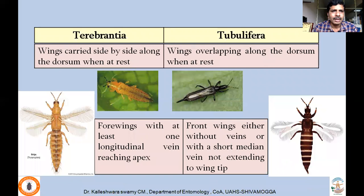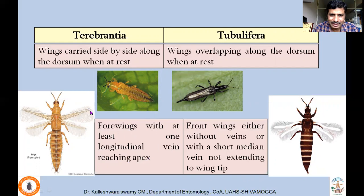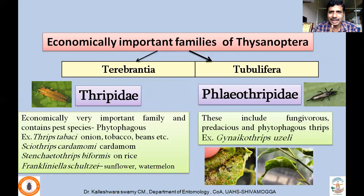In Terebrantia, wings are carried side by side along the dorsum at rest — they may touch each other but are not overlapping. In Tubulifera, the wings are overlapping. Regarding venation: in Terebrantia, at least one longitudinal vein reaches the apex of the wing, whereas in Tubulifera wings may lack veins entirely or, if a vein is present, it does not reach the apex. These are the key characters differentiating Terebrantia and Tubulifera.